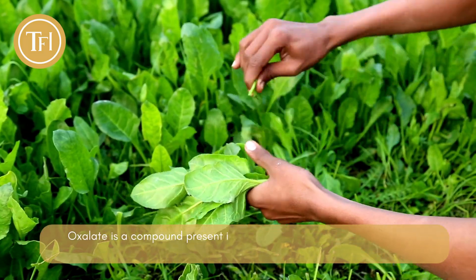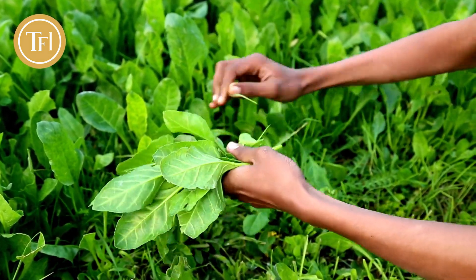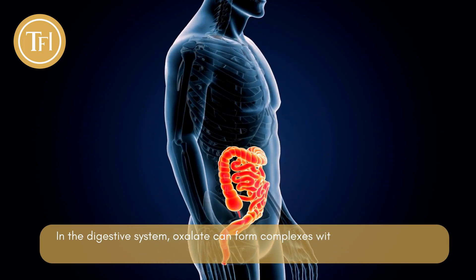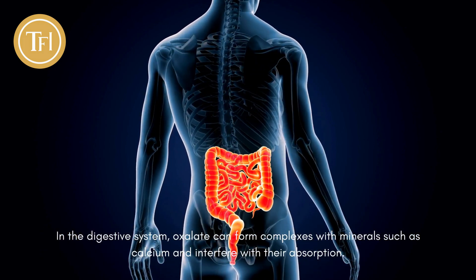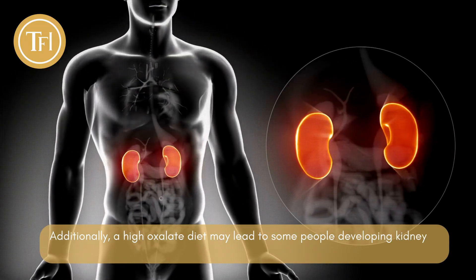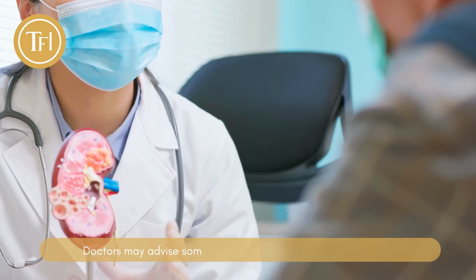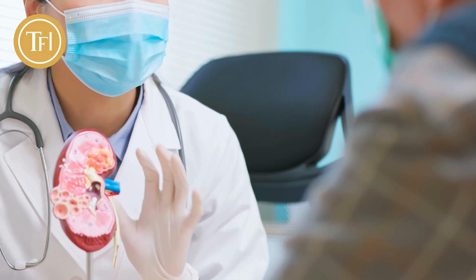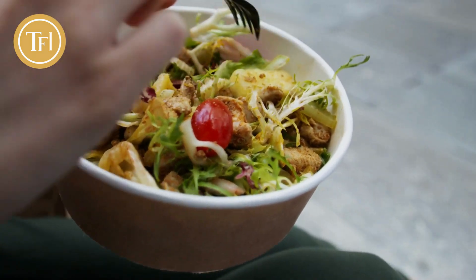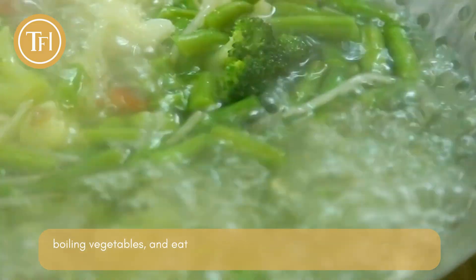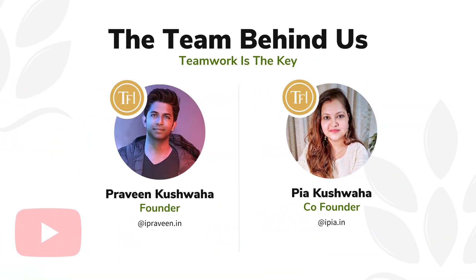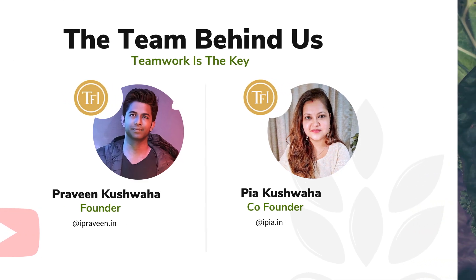In summary, oxalate is a compound present in many plant-based foods including spinach, chard, and kale. In the digestive system, oxalate can form complexes with minerals such as calcium and interfere with their absorption, and a high oxalate diet may lead some people to develop kidney stones. Doctors may advise some individuals to consume a low oxalate diet by replacing high oxalate foods with low oxalate alternatives, boiling vegetables, and eating foods rich in calcium alongside high oxalate foods. That's all for this series — hope it helps, thank you for watching.